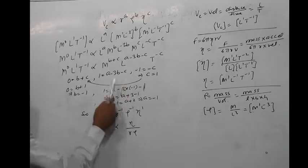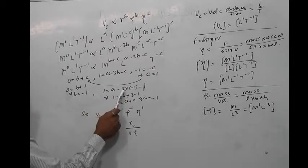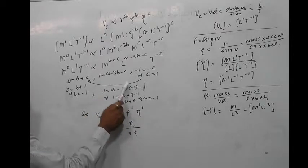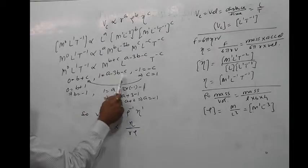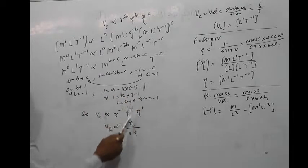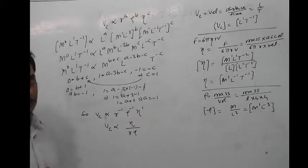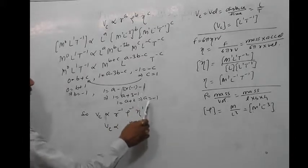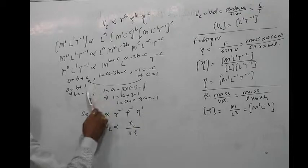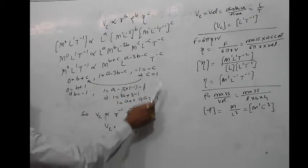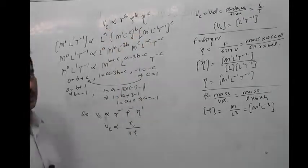Put these values in this equation: 1 is equal to A minus 3B minus C. B is minus 1, C is 1. We put it over here, so we get A is equal to minus 1. We have got the values of A also, B also, C also. Put these values in this equation and we have the requested expression.